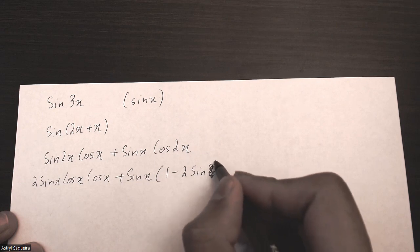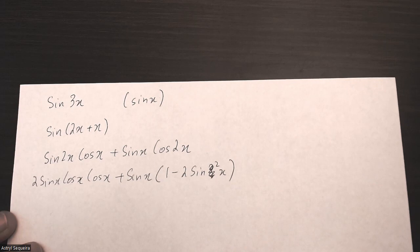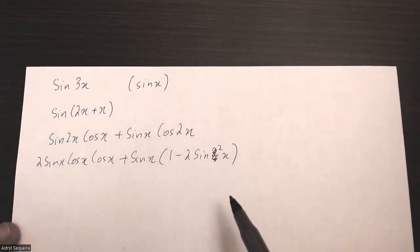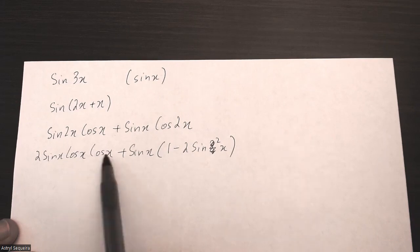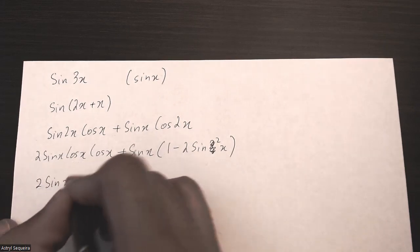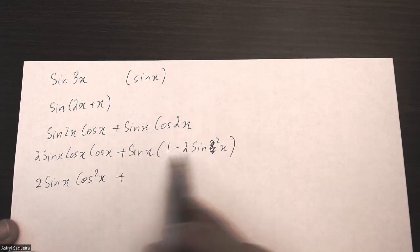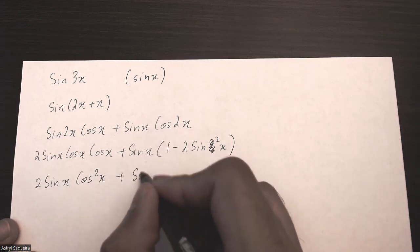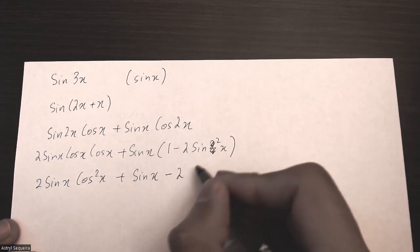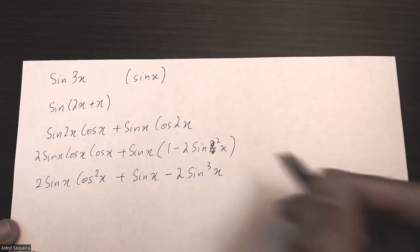This is the only formula that does not have a cos, that's why I'm using this from the three cos formulas. I can do cos times cos is cos squared. And here I can expand this bracket, so that's just sine x minus 2 sine cubed x.